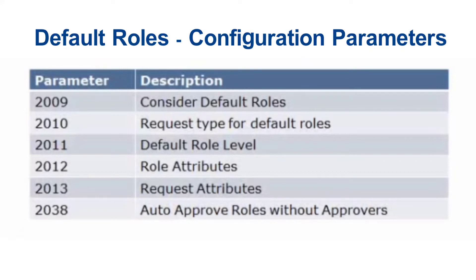These parameters majorly include 2009, 2010, 2011, 2012, 2013, as well as 2038. The parameter 2009 will tell the system whether the default role should be added to the access request or not.